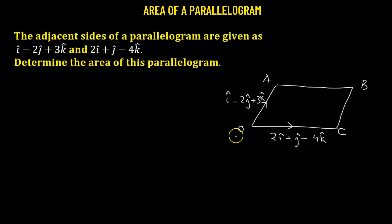So if we want to find the area of this particular parallelogram, that will be given by taking OA vector cross it with OC vector. So this is going to give us a vector, and finally we take the magnitude of that particular vector and that is going to give us the area.